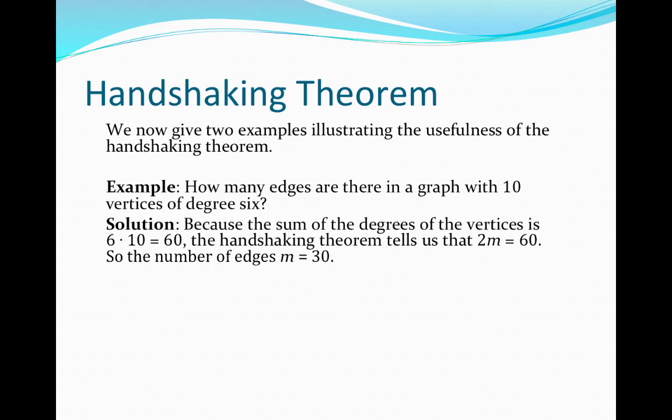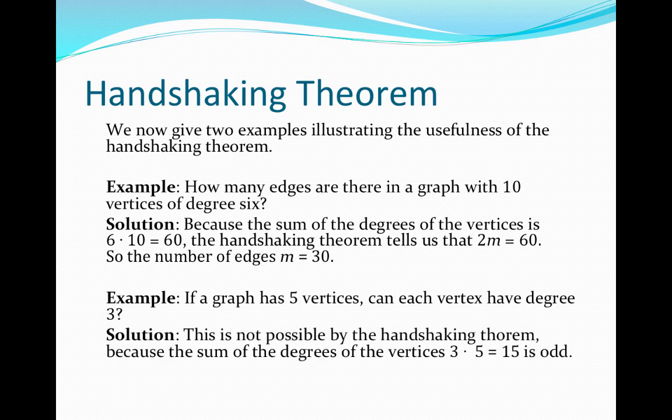So that's a simple application of the handshaking theorem. The second example says if a graph has 5 vertices, can each vertex have degree 3? So if we had a graph with 5 vertices each of degree 3, then the sum of the degrees of all of these vertices would simply be equal to 3 times 5, which is equal to 15.